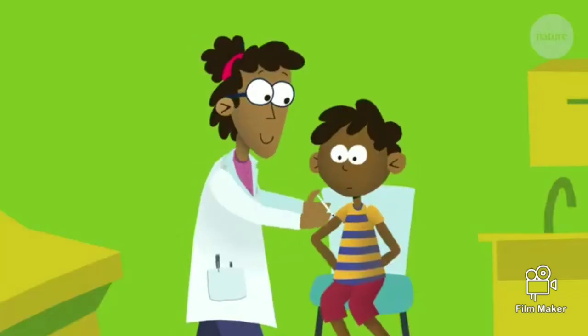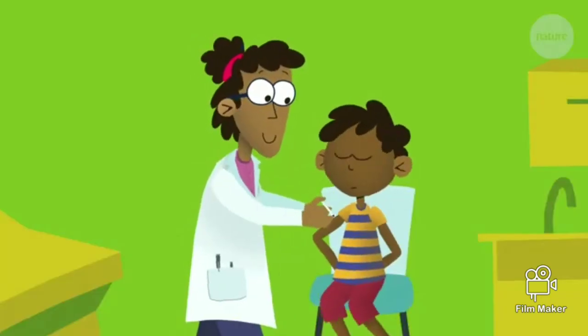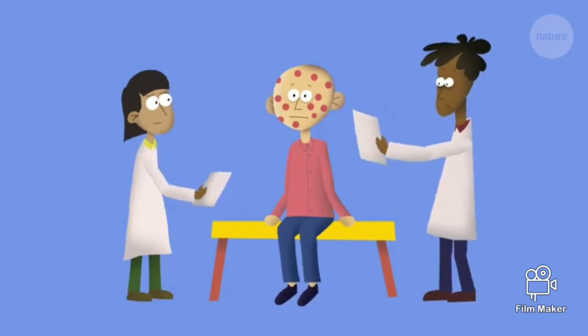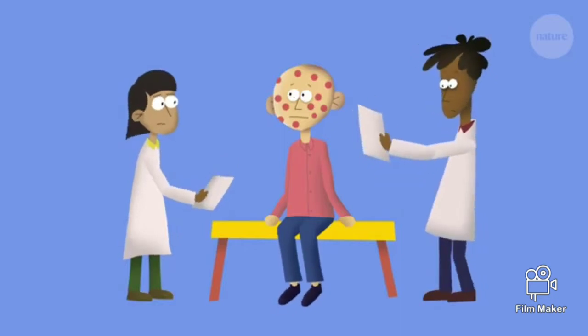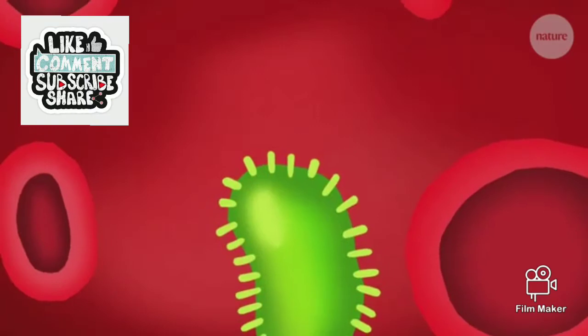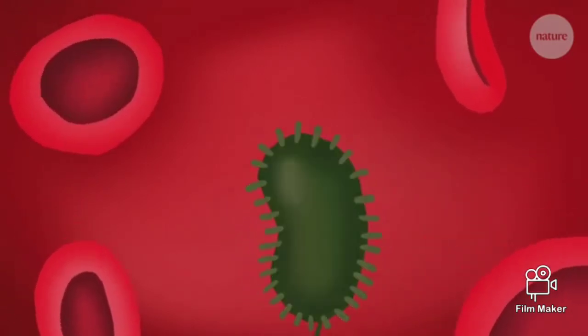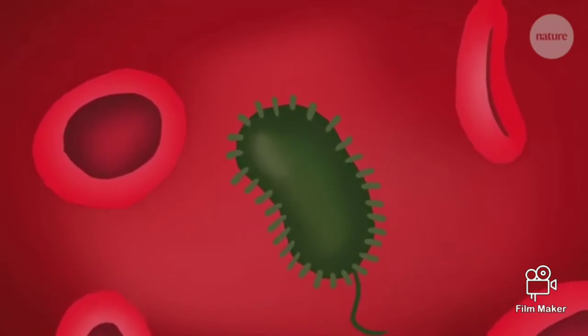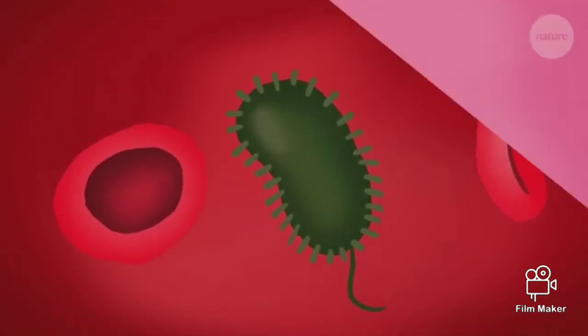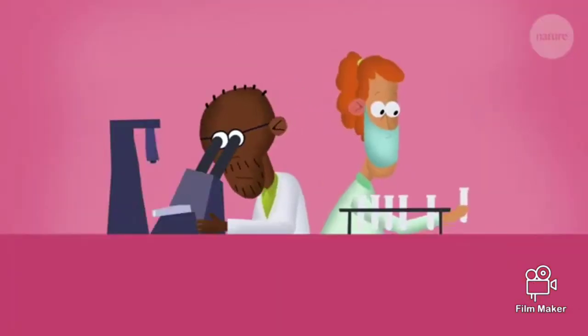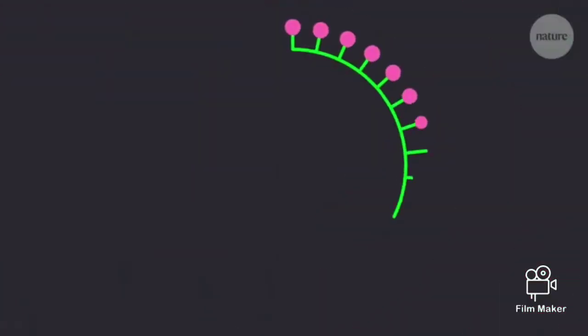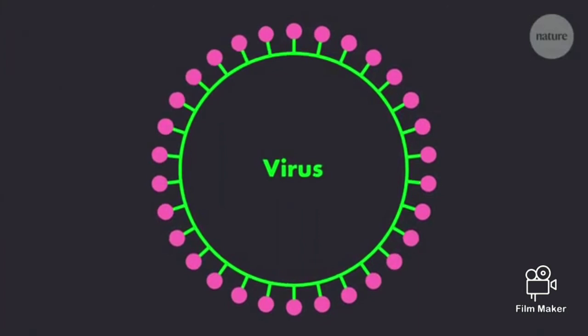And why does it take so long? Well, first you have to identify the virus or bacterium that causes the disease. In some cases, the pathogen itself can then be weakened or deactivated and used to make a vaccine. But this isn't always possible. In these cases, the next step is to identify the pathogen's antigens - unique protein or glycoprotein markers which can form the basis of a new vaccine.